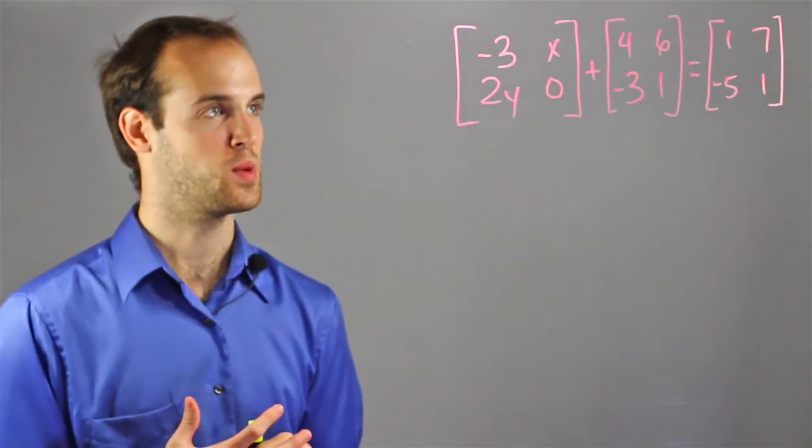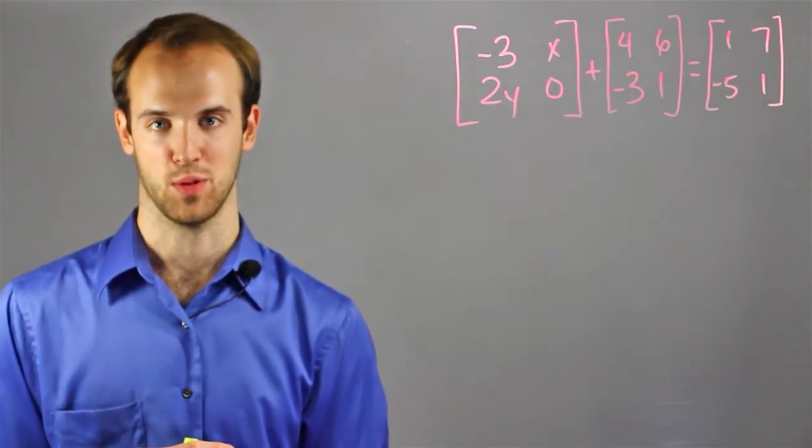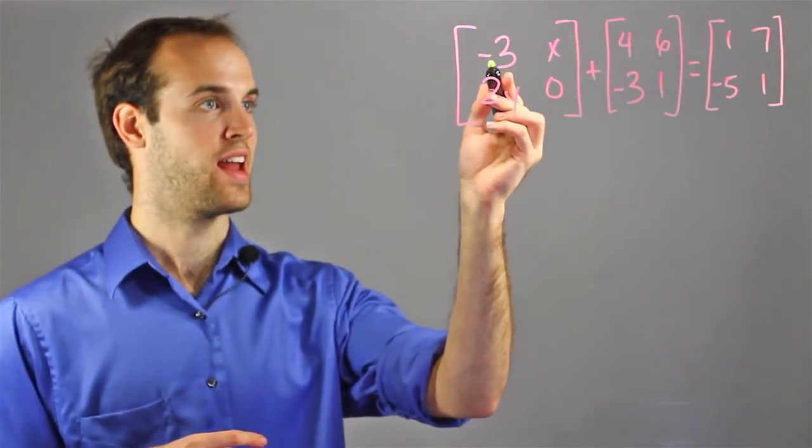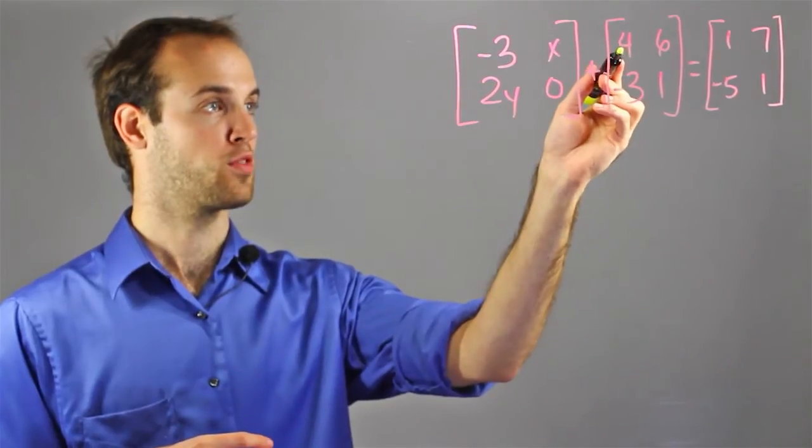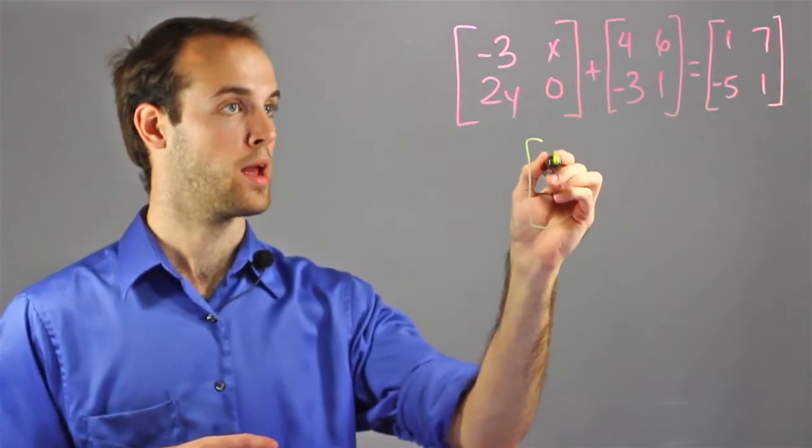The first thing I want to do with this matrix is to clean up the left side by adding the corresponding values. So I know that top left corner I've got negative 3, and top left corner over here I have 4. So that is going to combine to make 1.